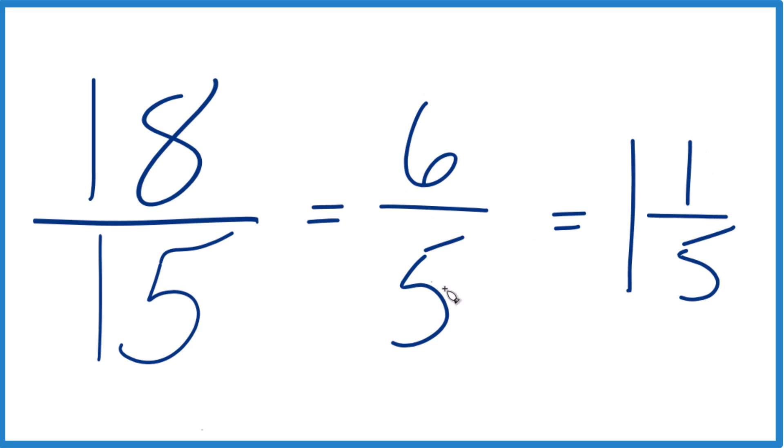So 6 fifths is equal to 1 and 1 fifth. So is 18 fifteenths. And you can check that. 1 times 5, that's 5. 5 plus 1, there's your 6, and we just keep the denominator the same.